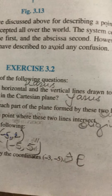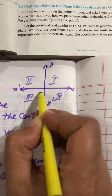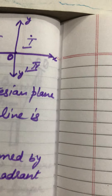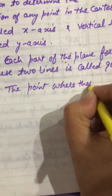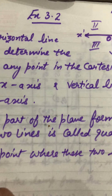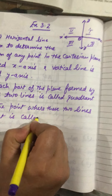Next: write the name of the point where these two lines intersect. You can see that the x-axis and y-axis intersect at point O, which is called the origin. So the point where these two lines meet is called the origin.